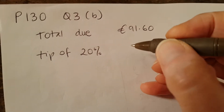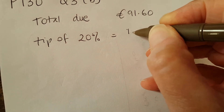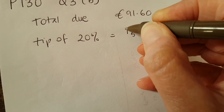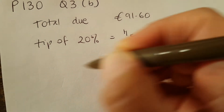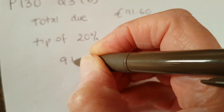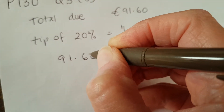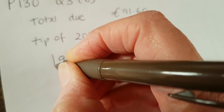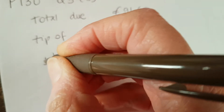So 20% — well that's the same as 1 fifth. So how do I find a fifth of something? I divide by 5. So my 91 euro 60, divided by 5.